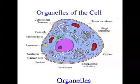Sometimes ribosomes are by themselves in the cell, but often they're associated with another organelle called the endoplasmic reticulum. If the endoplasmic reticulum has ribosomes on it, it's called rough endoplasmic reticulum. If it doesn't have ribosomes on it, it's called smooth endoplasmic reticulum. Rough endoplasmic reticulum, because it's got ribosomes on it, is involved in the synthesis and transport of proteins. Smooth endoplasmic reticulum is involved in the synthesis and transport of molecules other than proteins.